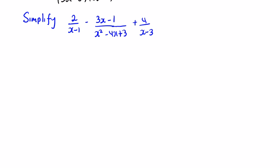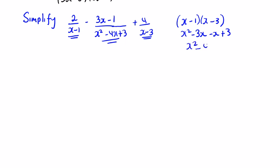So we're asked to simplify this fraction. There's normally a connection between the two linear terms and the quadratic. Let's double-check: (x minus 1)(x minus 3) equals x squared minus 3x minus x plus 3, which is x squared minus 4x plus 3. So you can see there is a connection between them.